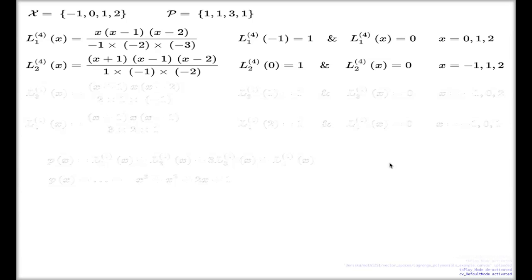We still have two other Lagrange polynomials. Here they are. The third one. Again, I take my linear brackets with the points here, except for the third point this time. Here's my linear brackets. And my denominator is the one which will appear if I use the enumerator with the value 1 instead of x. Here it is: 2, 1, and negative 1.